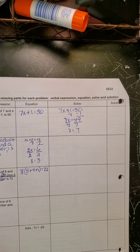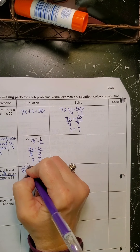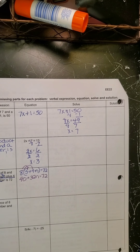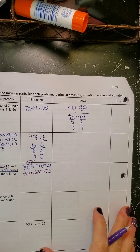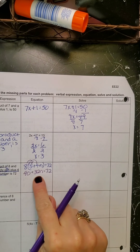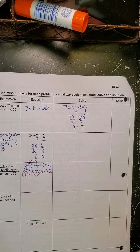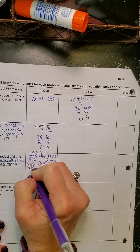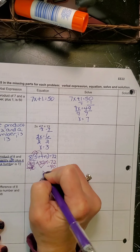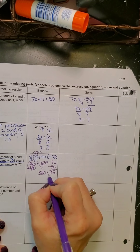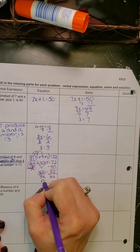8 times 5 is 40, plus 8 times 4n is 32n, equals 72. Going back and reviewing two-step equations — if we were flying a drone, our drone would hover over the side where the variable is. C comes before V alphabetically, so I'm going to do the constant term first: subtract 40 from both sides, giving 32n = 32. Divide both sides by 32, and n equals 1.